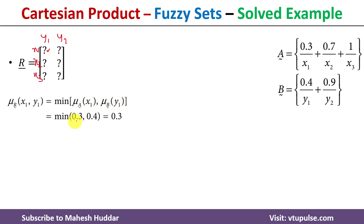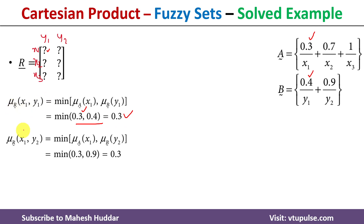The membership value of x1 in A is 0.3, and the membership value of y1 in B is 0.4. The minimum of these two is 0.3, so 0.3 is the value at position x1y1 in fuzzy relation R. Similarly, for x1y2: x1's membership value is 0.3 and y2's membership value is 0.9. The minimum is again 0.3, so 0.3 is the membership value at x1y2.